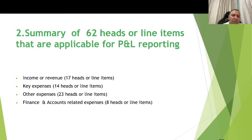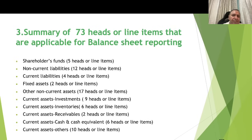In today's presentation I will primarily be covering the income or revenue related 17 heads. For balance sheet purposes there are broadly 73 heads under the following categories: shareholder's funds — 5 heads; non-current liabilities — 12 heads; current liabilities — 4 heads; fixed assets — 2 heads; other non-current assets — 17 heads; current assets investments related — 9 heads; inventories related — 6 heads; receivables related — 2 heads; cash and cash equivalents — 6 heads; and current assets others — 10 heads, totaling 73 heads.